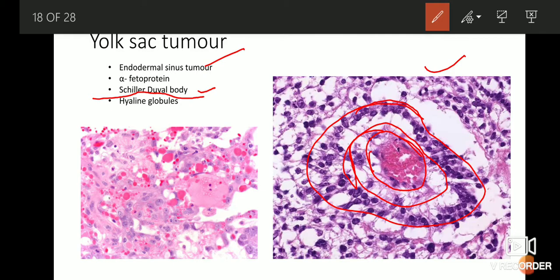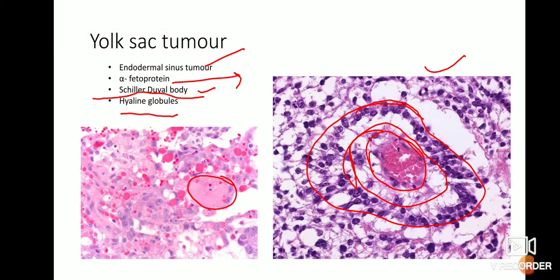This structure — a central blood vessel, a clear space, surrounded by a row of tumor cells — is known as a Schiller-Duval body. This is very characteristic of yolk sac tumor and is not found in any other tumor. In addition, these tumors exhibit large eosinophilic globules known as hyaline globules, which are chemically globules of alpha-fetoprotein. These are the characteristic features of a yolk sac tumor.